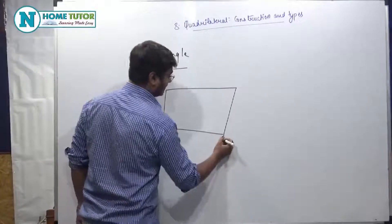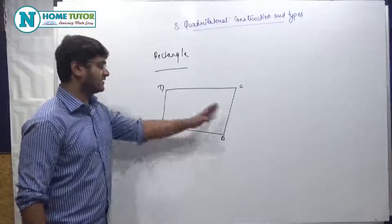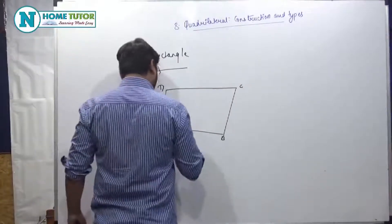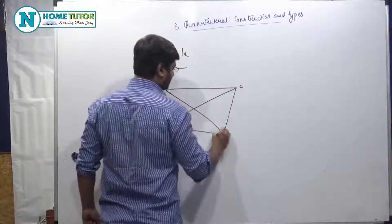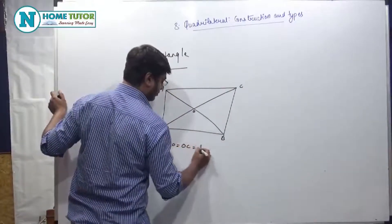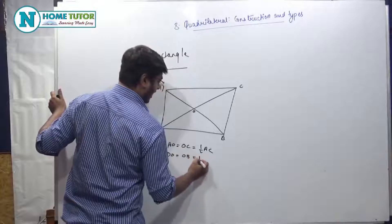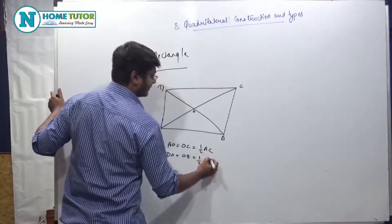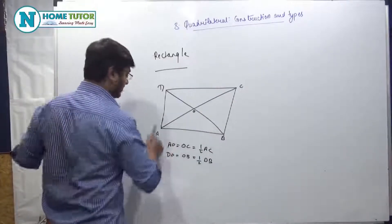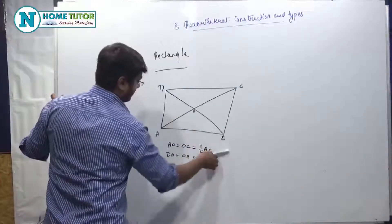So A, B, C, D — this is a kind of parallelogram in which all four sides are equal: AB = BC = CD = DA. The diagonals of a rhombus also bisect each other, मतलब कि AO = OC = half of AC, and DO = OB = half of DB. Opposite sides जो होती हैं वो हमेशा same या congruent होती हैं. So angle A = angle C, and angle D = angle B.